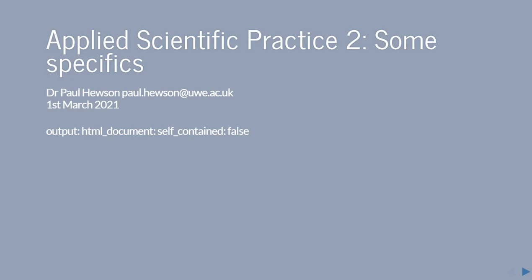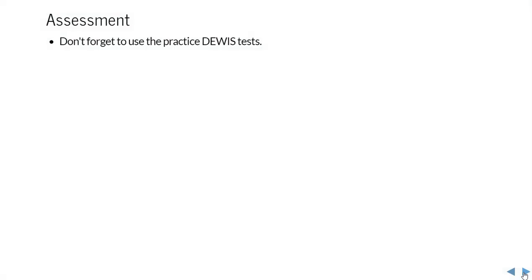We're now going to look at one specific example of a statistical procedure that you're going to see a lot of, and it's the chi-squared test. Please don't forget to use the practice tests—they're there to help prepare you for any assessments you might have as well as to make sure we understand the techniques we're covering.